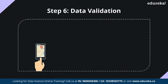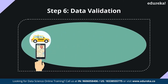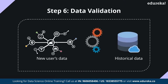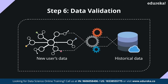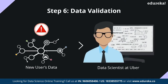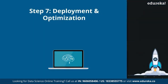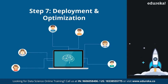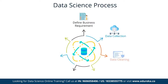Next is the data validation stage. The model is tested when a new customer books a ride. The data of the new booking is compared with the historic data to check if there are any anomalies in the surge prices or any false predictions. If any such anomalies are detected, a notification is immediately sent to the data scientists at Uber who fix the issue. This is how Uber predicts the surge price for a given location and time. The final stage of data science is deployment and optimization. After testing the model and improving its efficiency, it is deployed to all users. Customer feedback is received and any issues are fixed here.